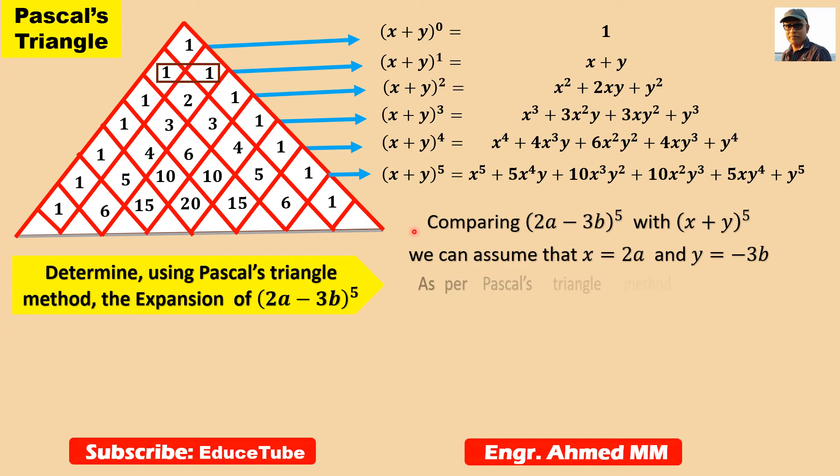So as per Pascal's triangle method, I want to bring down (x + y)^5. I have to expand this. So what I will do? In all the positions of x and y, I will substitute it by 2a and minus 3b. That's the point. It's very easy.